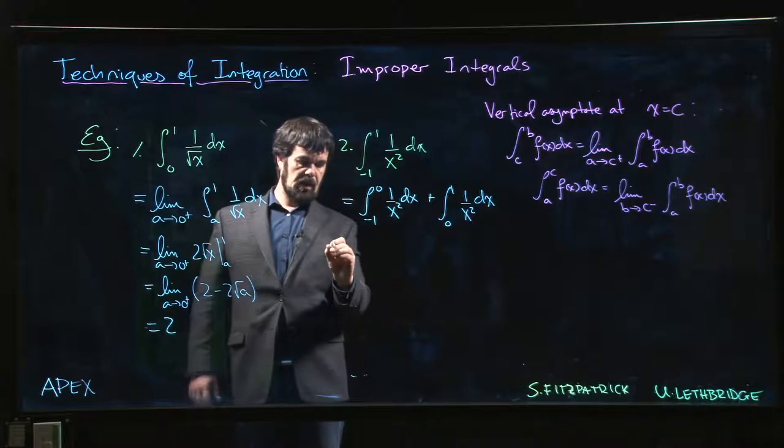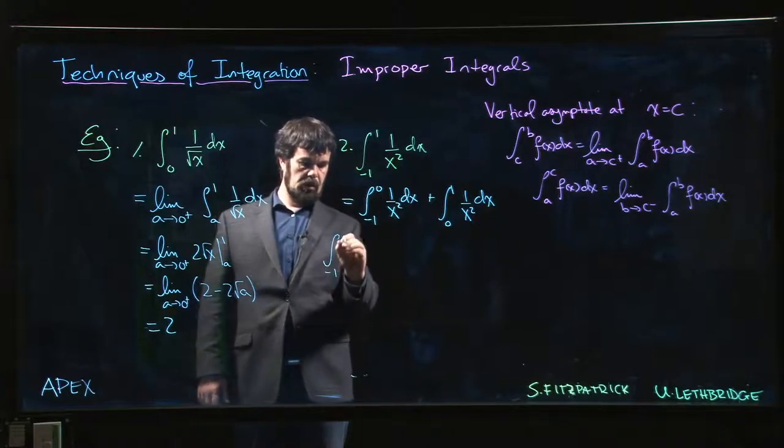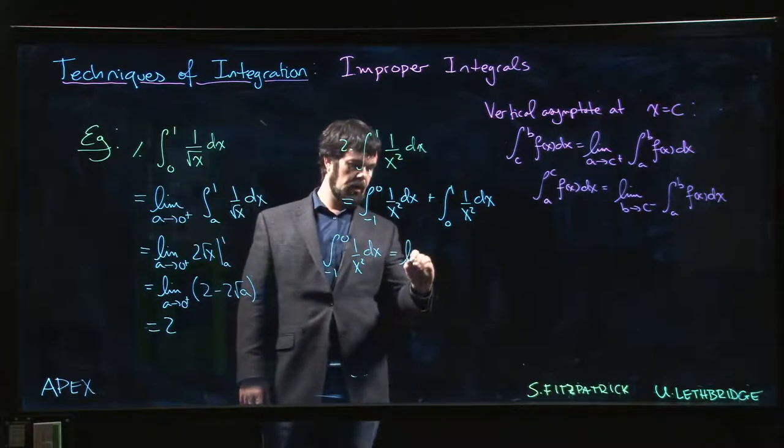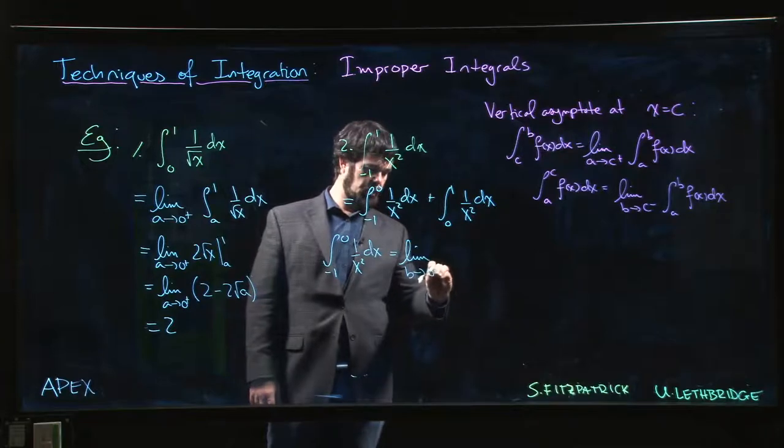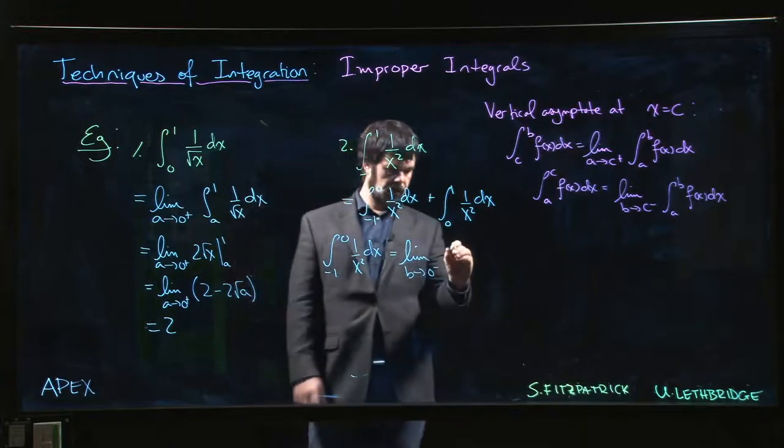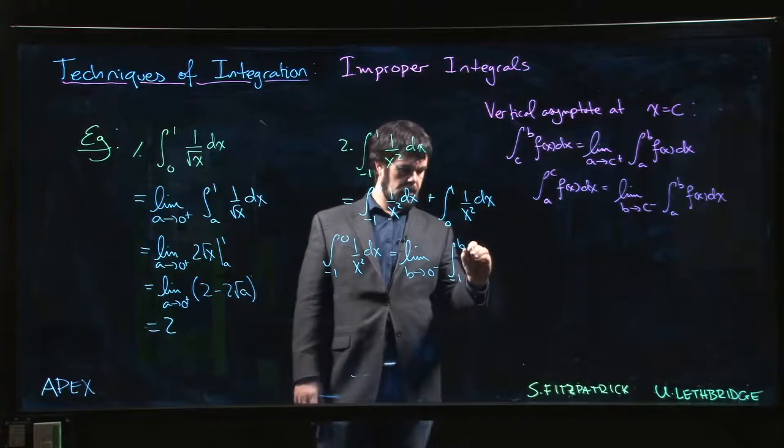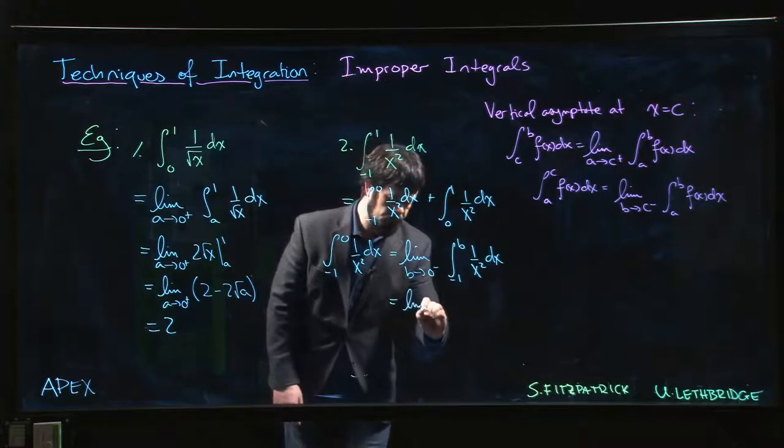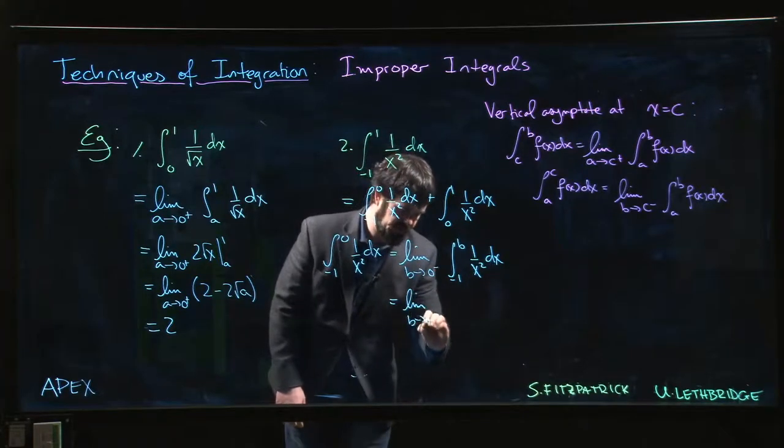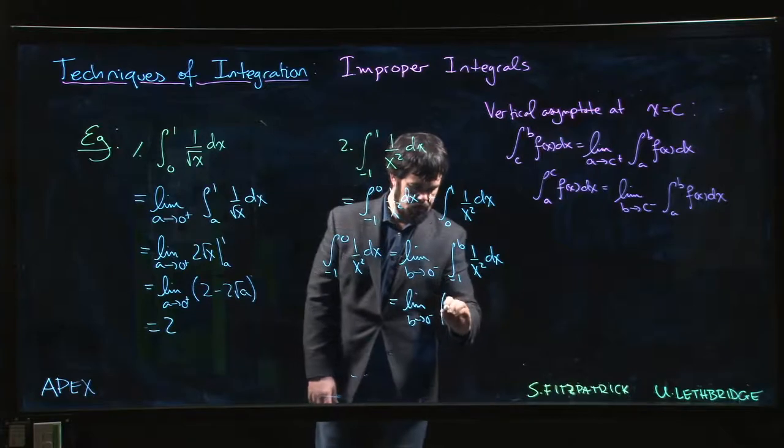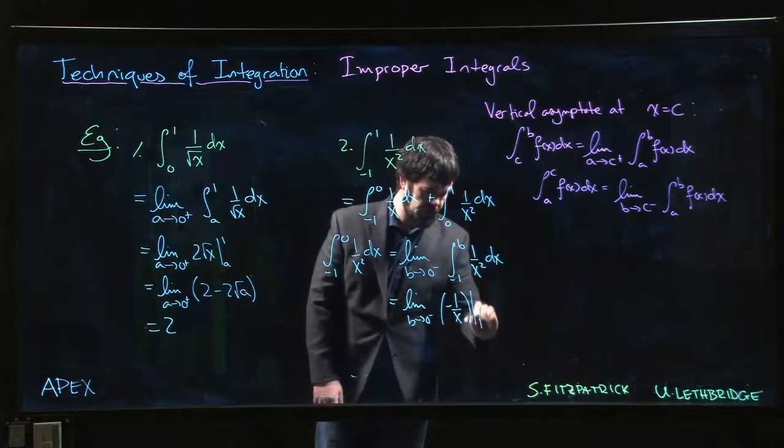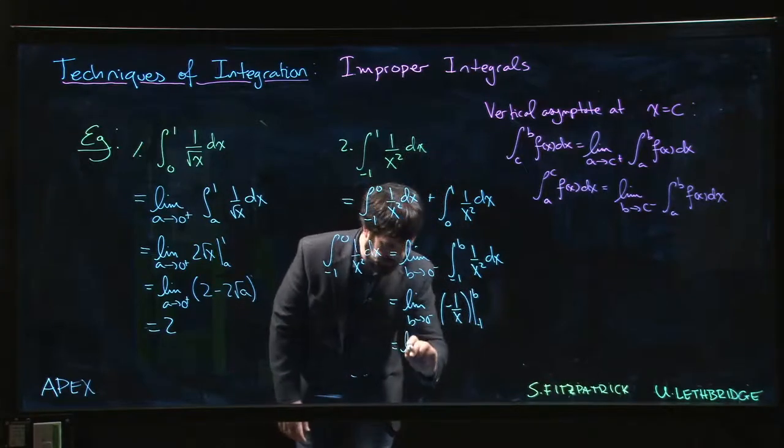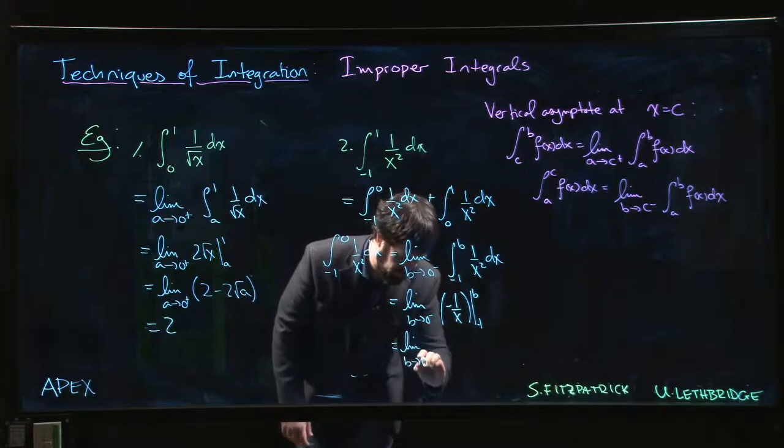So we look at say the integral from minus one to zero of one over x squared dx, and we can say that that is the limit as b approaches zero from the left of the integral from minus one to b of one over x squared. So that is the limit as b approaches zero from the left of minus one over x evaluated from minus one to b.